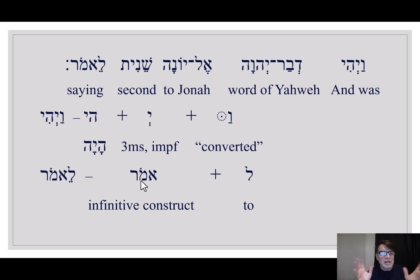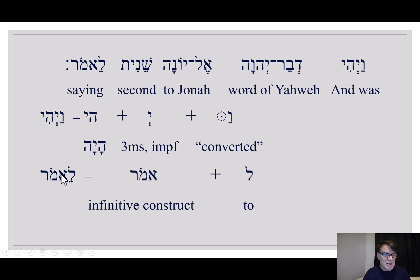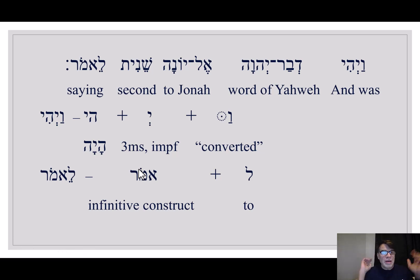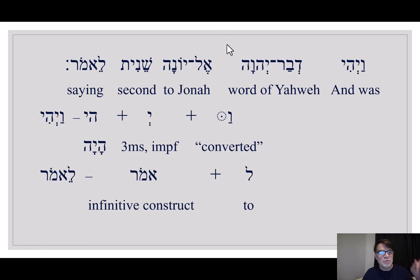Literally it's more like 'the second word of the Lord came to Jonah to say...' The usual form of an infinitive construct is a vocal sheva under the first consonant and a holom after the second. The aleph quiesces, so the vowels do a little crazy thing at the beginning. So 'Shenit' is what's called an ordinal number — first, second, third — ordinal. And the second word of the Lord came to Jonah saying. Onward to Jonah 3.2!